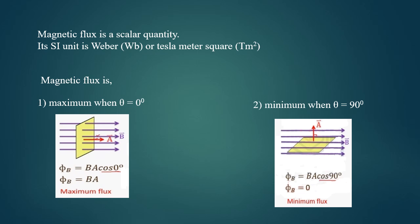The SI unit of magnetic flux is Weber, which is also equal to one tesla meter square. That is, the SI unit of magnetic field is tesla and that of area is meter square.